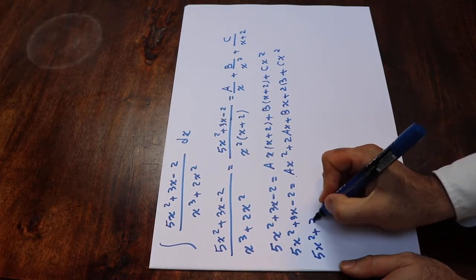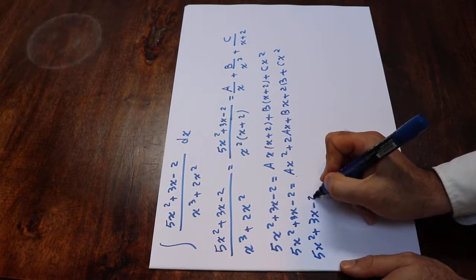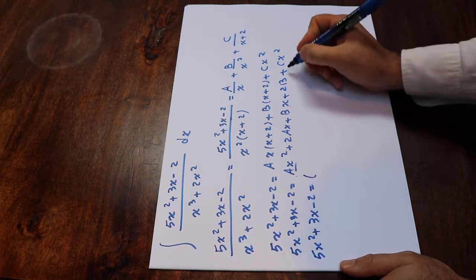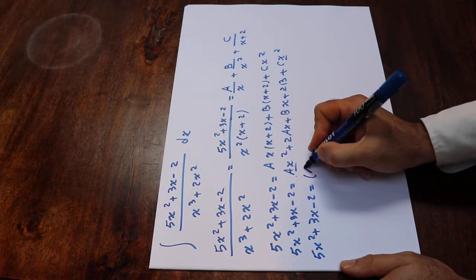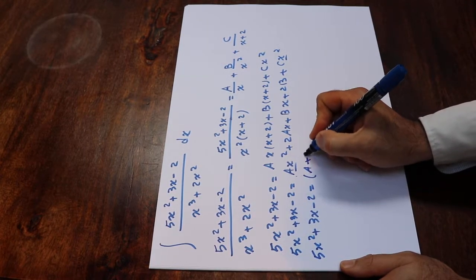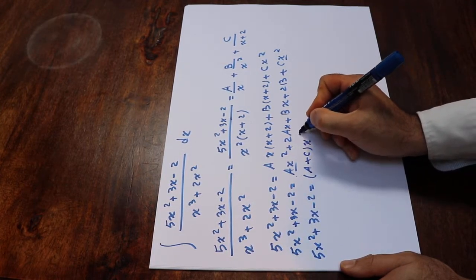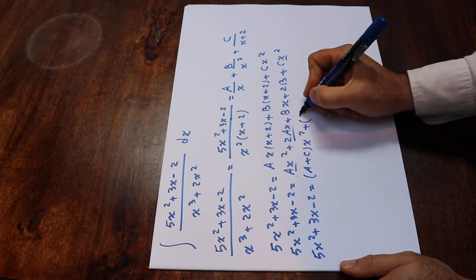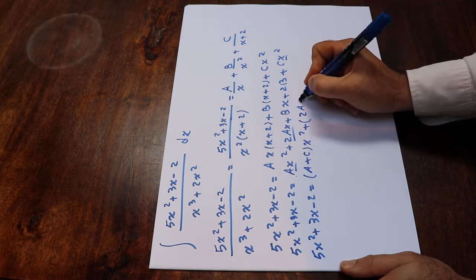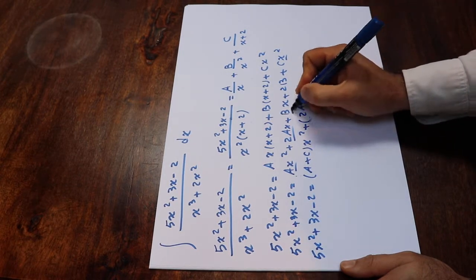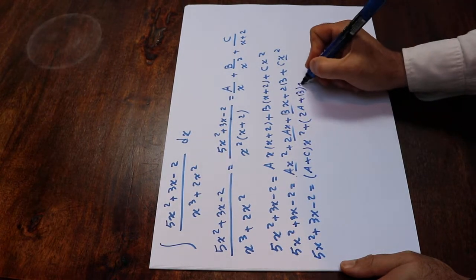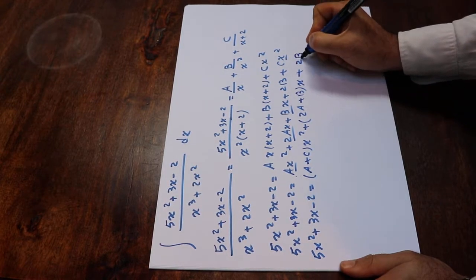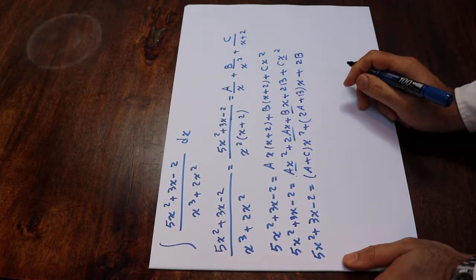Therefore, 5x² + 3x - 2 equals (a + c)x² + (2a + b)x + 2b, collecting terms by powers of x.